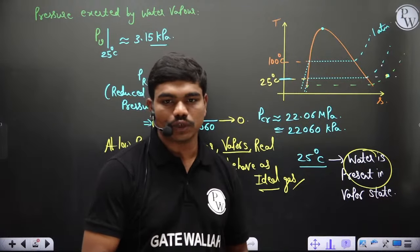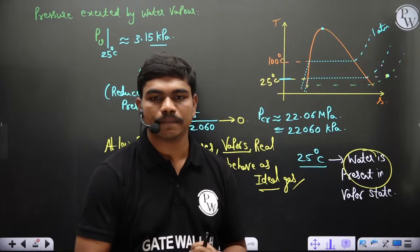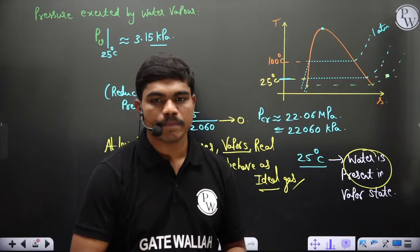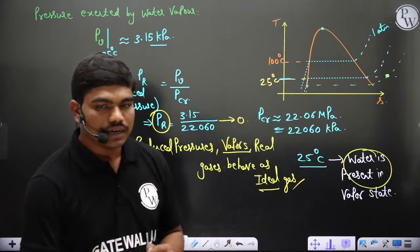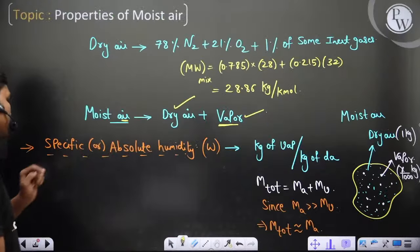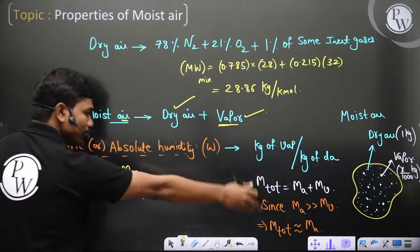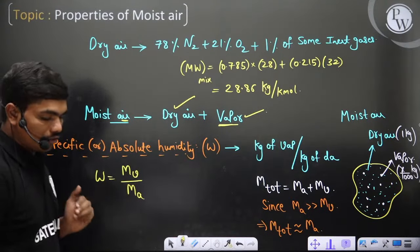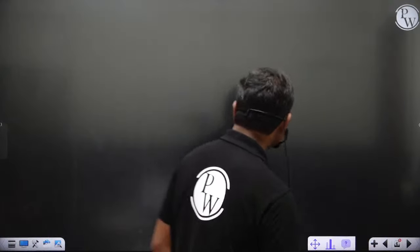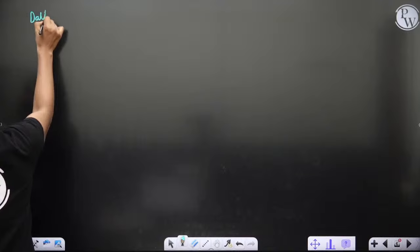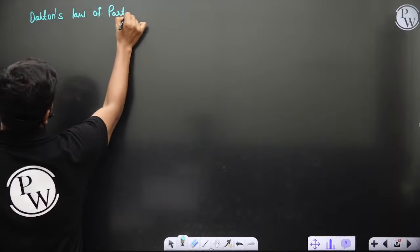Since we can treat vapor as ideal gas, let's derive the specific humidity omega = mass of vapor / mass of dry air. In basic thermodynamics you may have studied Dalton's law of partial pressures. In a mixture, P_total equals the sum of partial pressures of all components. The partial pressure of the i-th gas equals its mole fraction times P_total.